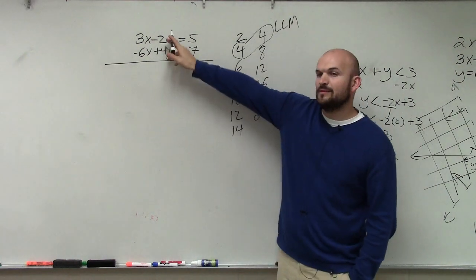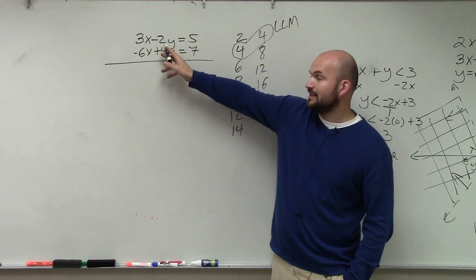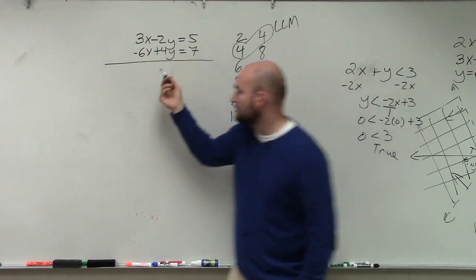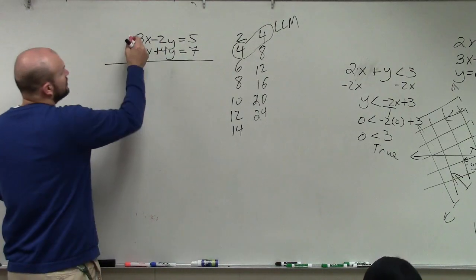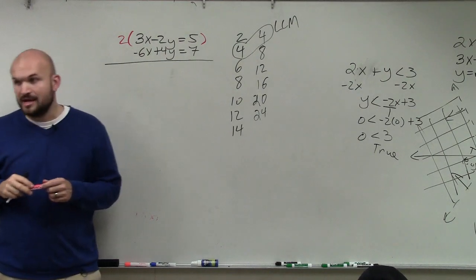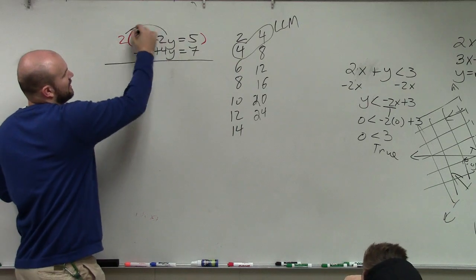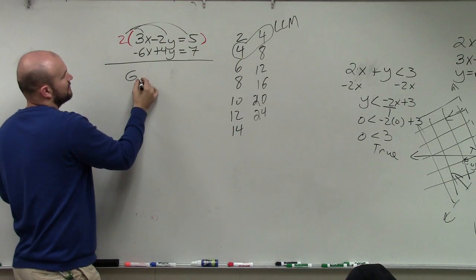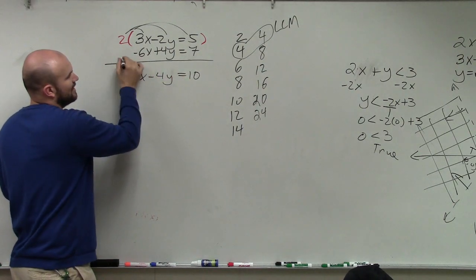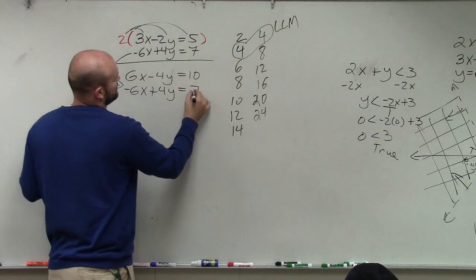All right. Now, so that means I want to get my coefficient of my variable y to both be 4. Well, this one's already 4. So to get this to be 4, forget about the negative. To get this to be 4, I need to multiply it by what? 2. So this is what we call our multiplier. Sometimes, ladies and gentlemen, you need to multiply both equations to get them to have common multiples or common coefficients. So when I multiply, I apply distributive property. And I get 6x minus 4y equals 10. And then I just rewrite this one down below. Negative 6x plus 4y equals 7.